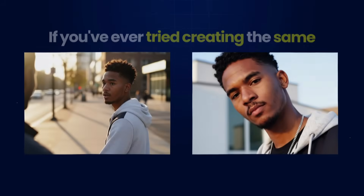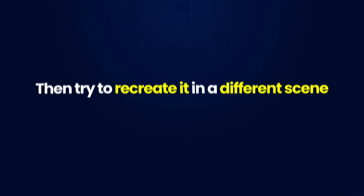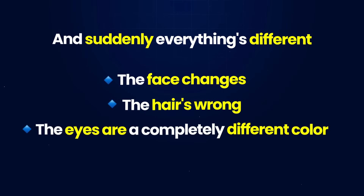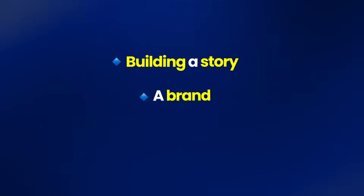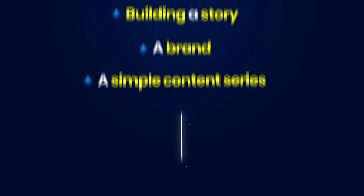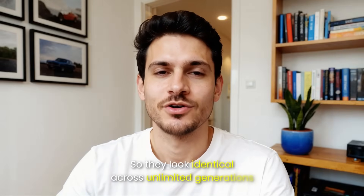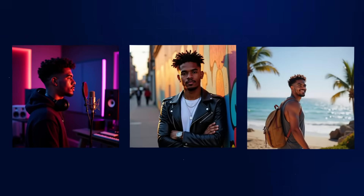If you've ever tried creating the same AI character twice, you know exactly how frustrating it can be. You generate an image, love how it looks, then try to recreate it in a different scene, and suddenly everything's different. The face changes, the hair's wrong, the eyes are a completely different color. This inconsistency kills any chance of building a story, a brand, or a simple content series. But there's actually a way to lock in your character's identity so they look identical across unlimited generations, no matter what scene, pose, or outfit you put them in.